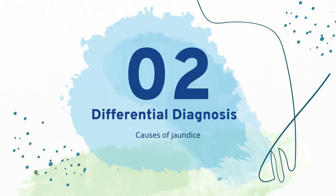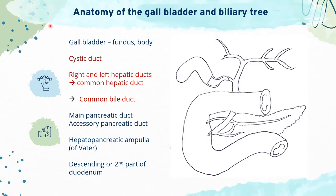Now we'll proceed to the second part of this video, which consists of differential diagnosis and causes of jaundice. Before we discuss further, let us have a quick recap on the anatomy of the gallbladder and biliary tree.